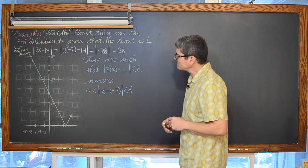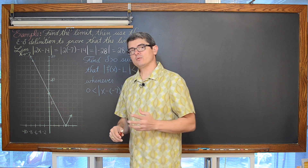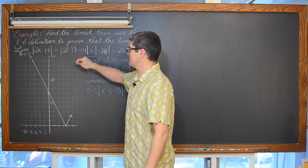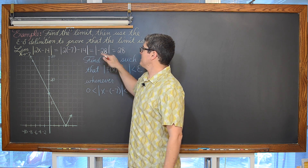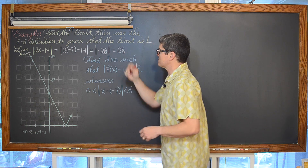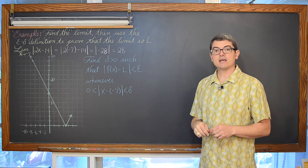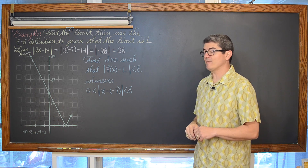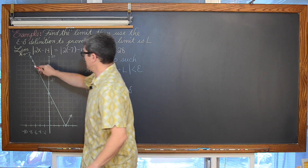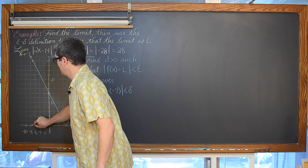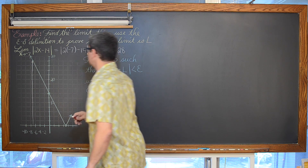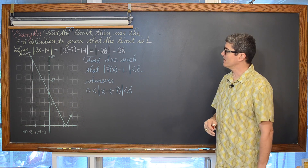One thing to take note of as we do our proof: when we let x approach negative 7, the absolute value signs had to change the sign of our answer because 2 times negative 7 minus 14 came out to be negative 28, so we had to change the sign to get the limit of 28. We can see this on the graph as we approach that y-value of 28.